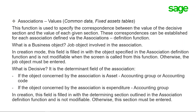Finally, Associations Values is located under Common Data > Fixed Assets > Tables. This function specifies the correspondence between the value of the decisive section and the value of each given section. These correspondences can be established for each association defined via the Associations Definition function. In creation mode, the business object field is filled in with the object specified in the association definition and is not modifiable when called from that function.